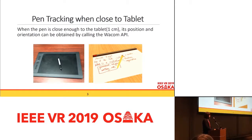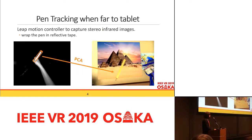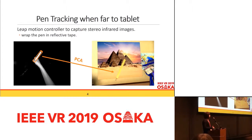How do we implement the pen tracking? When the pen is close enough to the tablet, its position and orientation can be obtained by calling the Wacom API. On the other hand, when the stylus is far away from the tablet surface, the motion controller captures the real infrared image, and we unproject the stylus pixels from 2D back to 3D. Then we use the PCI method to compute the main axis of these 3D pixels to determine its orientation and position.